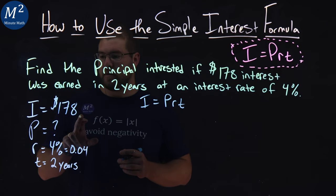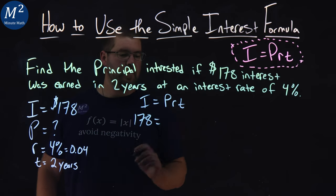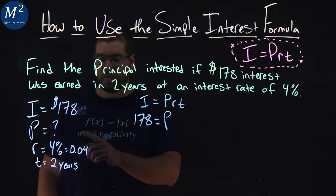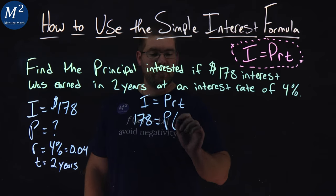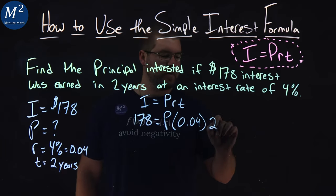Our interest earned is $178, which equals our principal (which we don't know) times the rate of 4% as a decimal, 0.04, times our time which is two years.